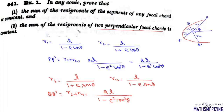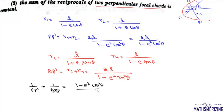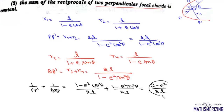Now we find the sum of reciprocals of the two perpendicular focal chords: 1/PP' + 1/QQ' = (1 - E²·cos²θ)/2L + (1 - E²·sin²θ)/2L. Since sin²θ + cos²θ = 1, this simplifies to (2 - E²)/2L, which is independent of θ. Therefore the sum of reciprocals of two perpendicular focal chords is constant.